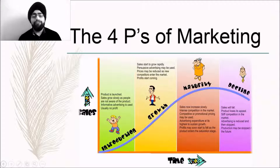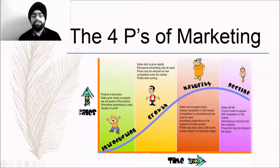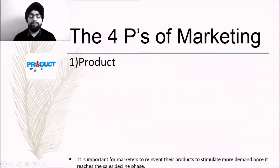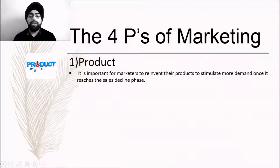As you move from the Maturity Phase to the Sales Decline Phase, there is stiff competition in the market and the product starts to lose its appeal. Now it is very important to decide whether to further continue with the product or not. If you decide not to continue, the production might be ultimately stopped. For any product, it is extremely important to re-invent the product continuously during the Product Life Cycle.